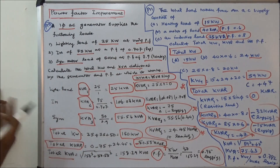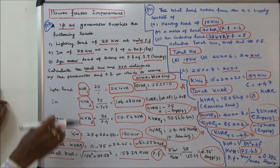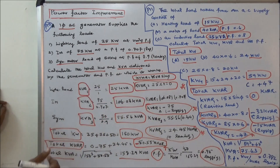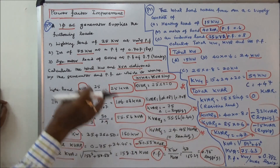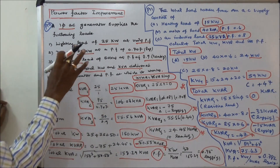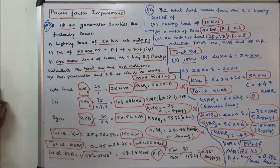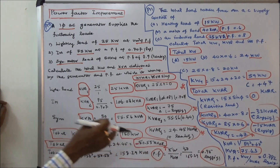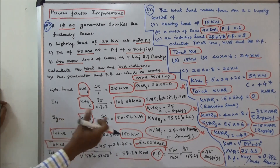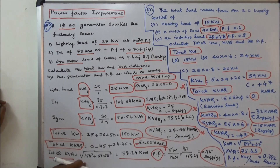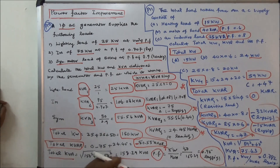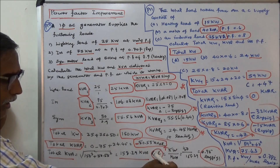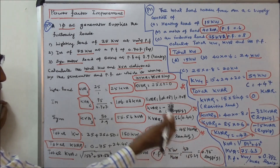Next we calculate the total kVAR. kVAR equals kVA into sin φ. First case resistive load: kVAR1 is equal to 0. Second case induction motor: kVAR2 is equal to minus 75 — the minus sign indicates lagging. Third, synchronous motor: 24.45 kVAR leading, positive sign. Total kVAR is 0 minus 75 plus 24.45, equal to minus 50.55 kVAR. Total kVA is root of (150 squared plus 50.55 squared), equal to 158.29 kVA. Power factor is total kW divided by total kVA: 150 divided by 158.29, equal to 0.95 lagging.